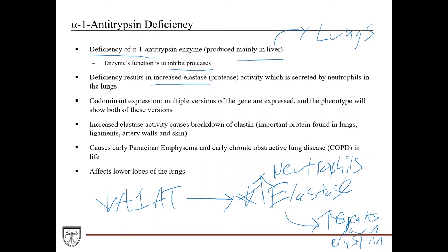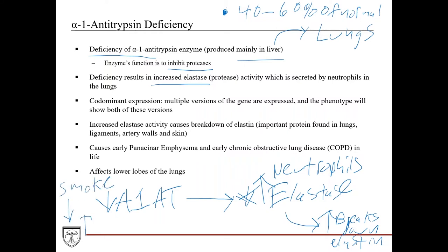This causes patients to develop emphysema earlier in life due to breakdown of the supporting tissue of the lungs. There are different forms of the disease. In the less severe forms, patients have about 40 to 60% of normal levels of alpha-1 antitrypsin. If they don't smoke, they can often lead a normal life. However, smoking increases inflammation and also directly inhibits alpha-1 antitrypsin, so it has a double negative effect and can exacerbate the situation, leading to early emphysema.